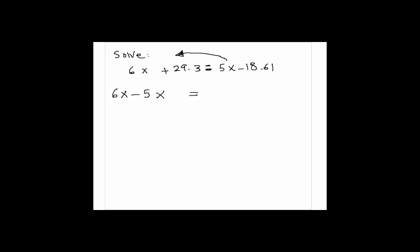At the same time, if I move the constant 29.3 to the right, its sign changes to its opposite sign, would be minus 29.3. This would be like subtracting 29.3 from both sides of the equation.